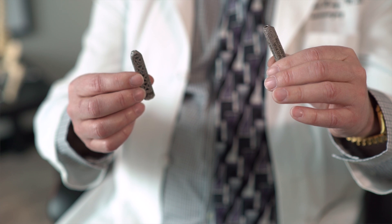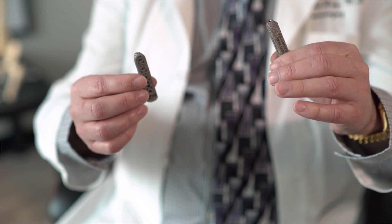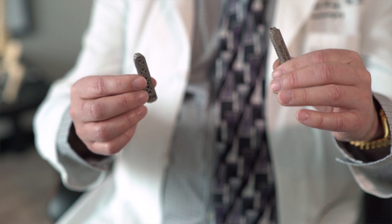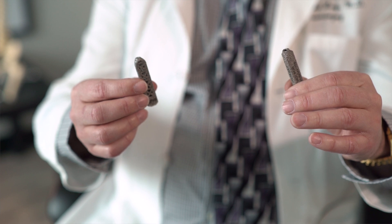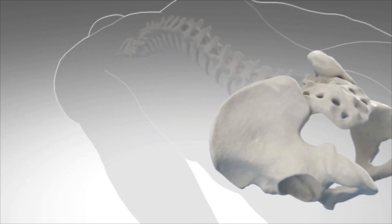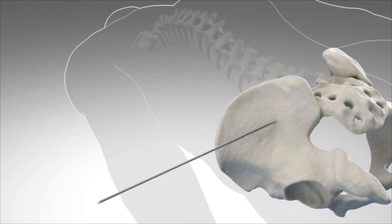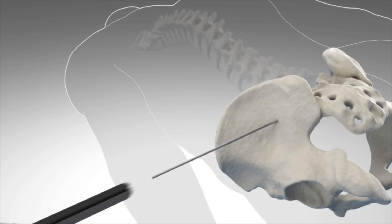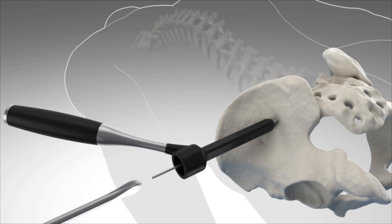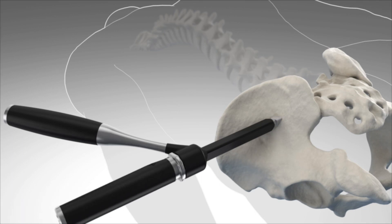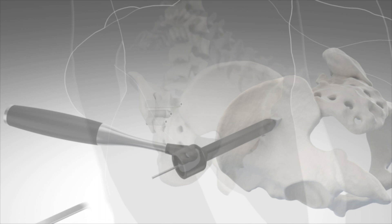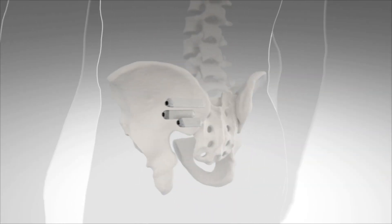iFuse has a unique patented triangular shape designed to provide immediate stabilization and long-term fusion of the joint. The entire procedure is performed through a small incision approximately one to one and a half inches in size on the side of your buttock. Approximately two to four implants, normally three, will be used depending on the size of your joint. This entire procedure takes approximately one hour.